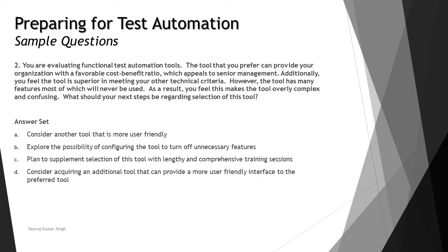Question number two: you are evaluating functional test automation tools. The tool you prefer can provide your organization with a favorable cost-benefit ratio, which appeals to senior management. Additionally, you feel the tool is superior in meeting your other technical criteria. However, the tool has many features, most of which will never be used. As a result, you feel this makes the tool more complex and confusing. What should your next steps be regarding the selection of this tool?